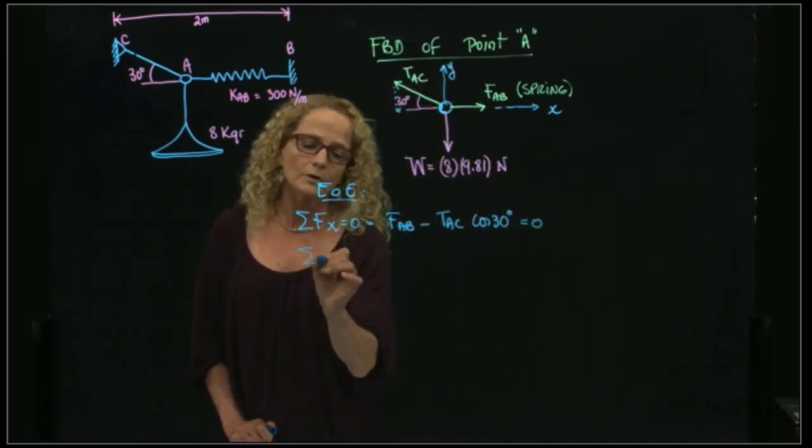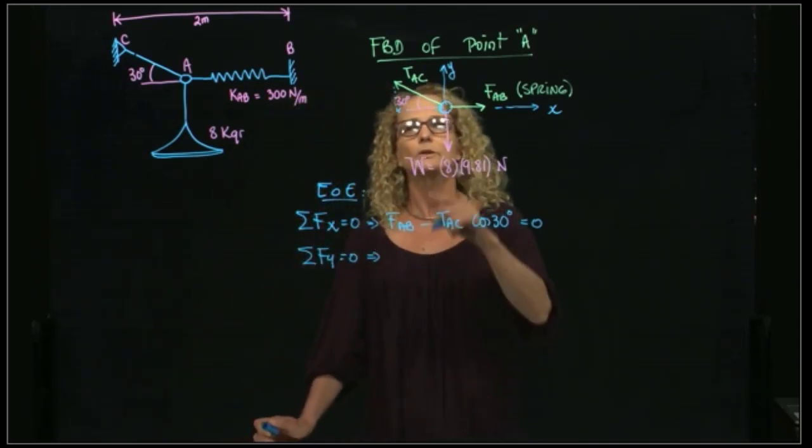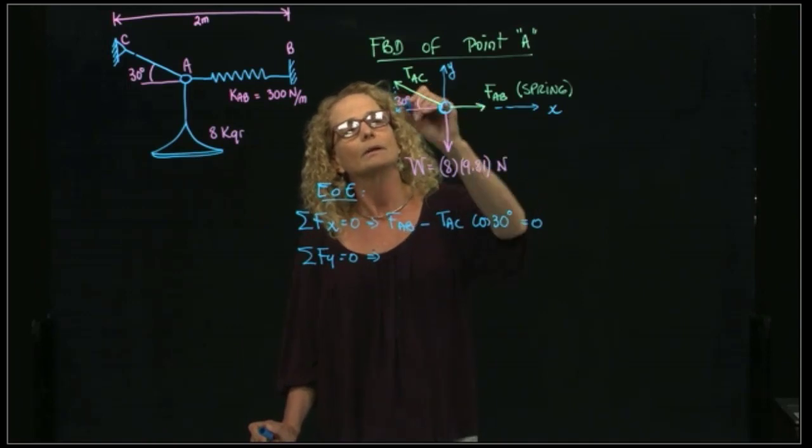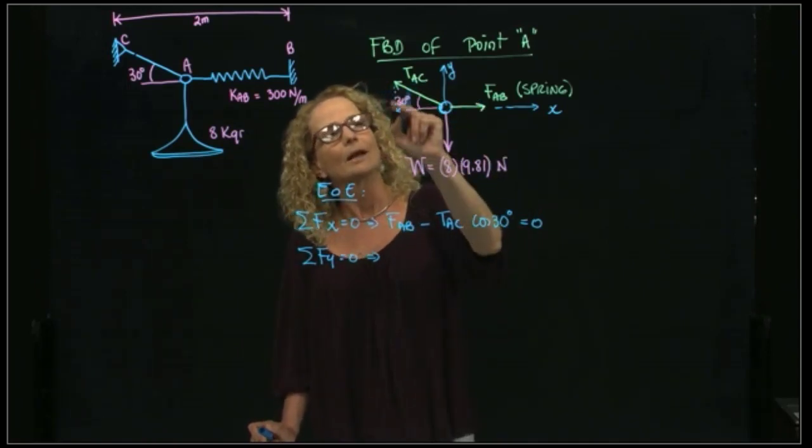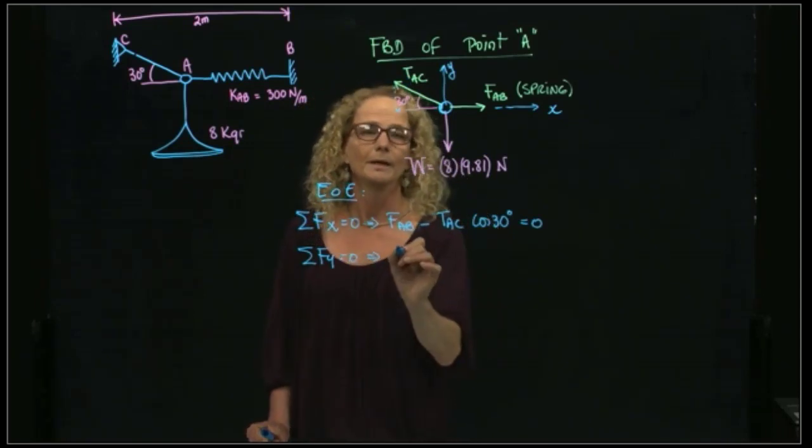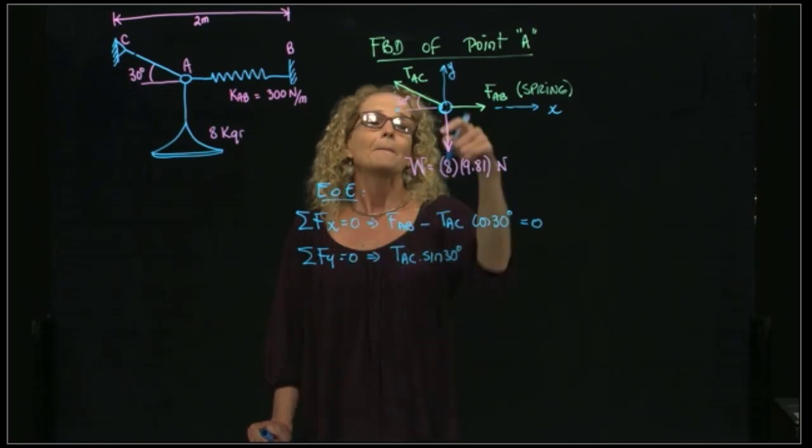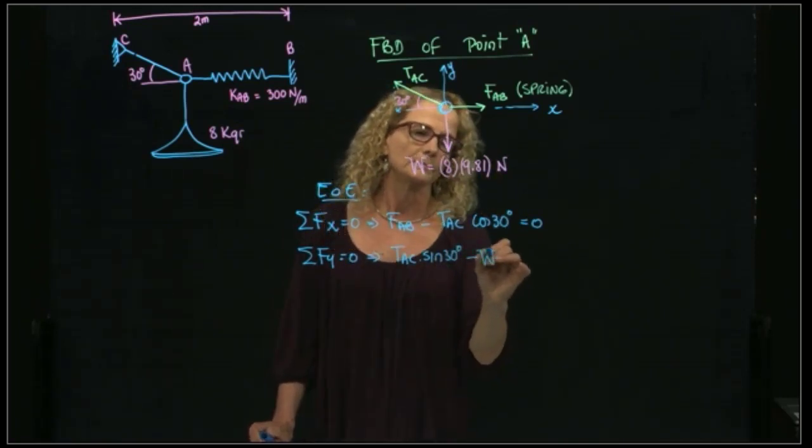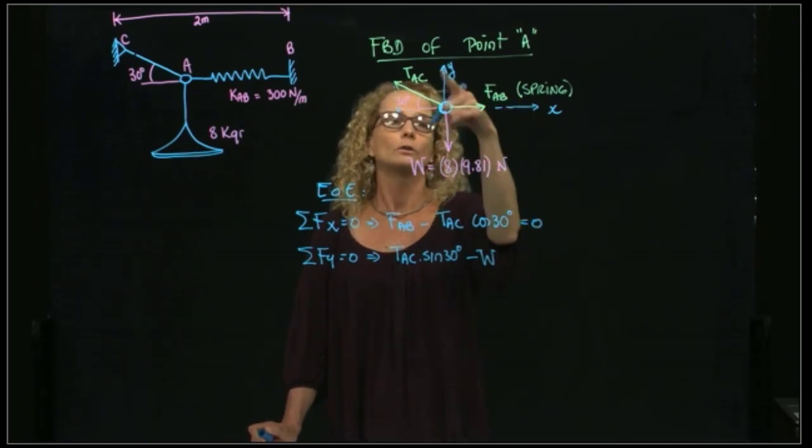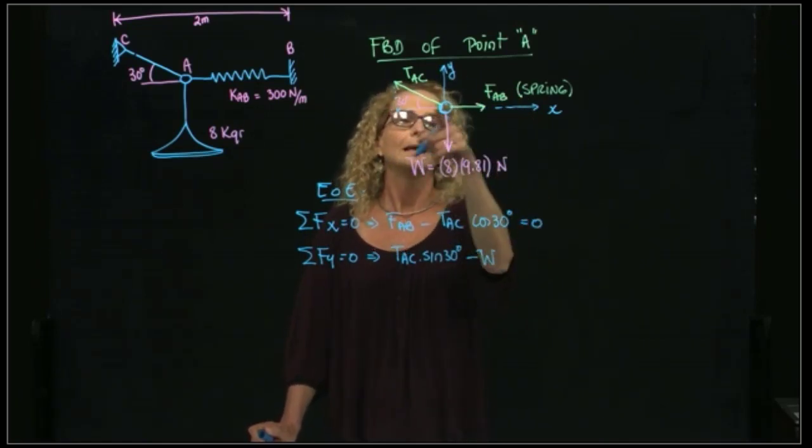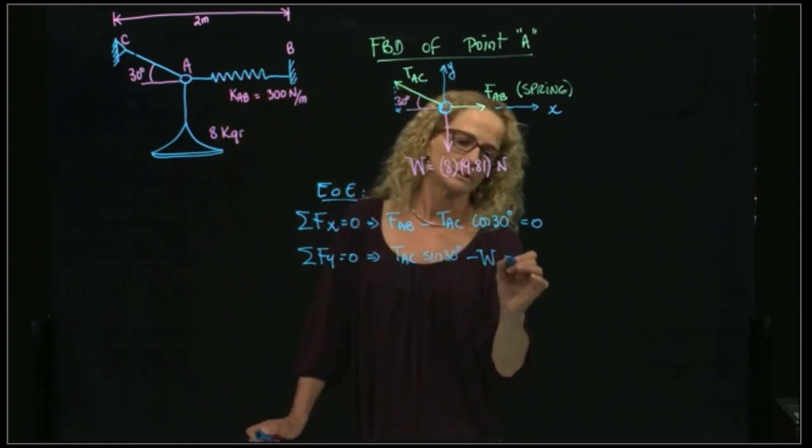And then I add forces in the Y direction, which equals to zero. And that gives me the following equation. Because the adjacent was in X, the opposite is in Y. So it will be the AC sine of 30 minus the weight. And this force of the spring does not contribute to the Y direction because it's only along the X direction. So this is equal to zero.